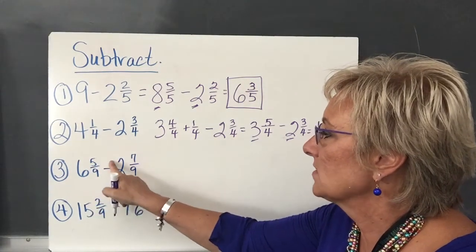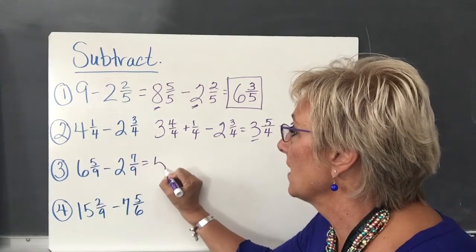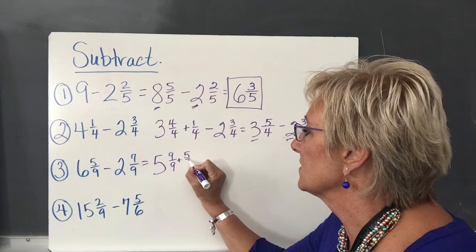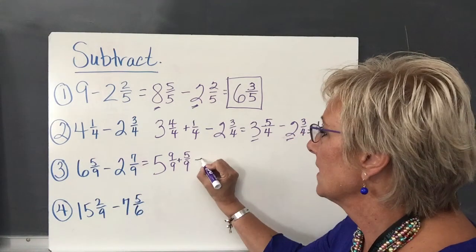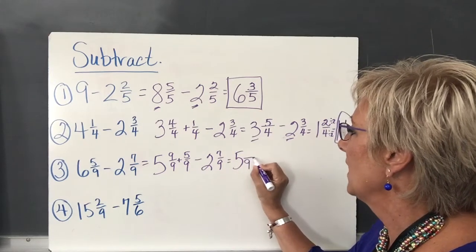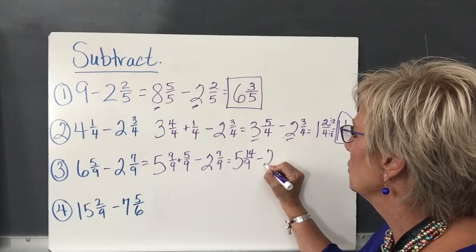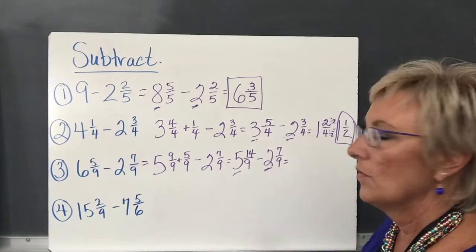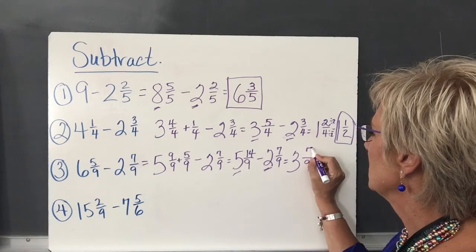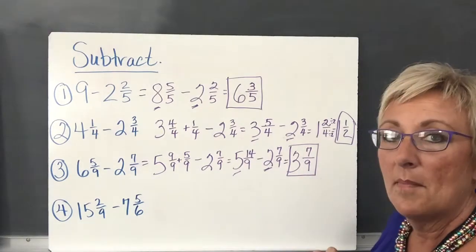Here I've got 6 and 5/9 minus 2 and 7/9. Since 5 minus 7 won't work, I have to borrow from the 6, leaving me with 5. Remember, 5 and 9/9 is the same as 6. But I also have to add the 5/9 that was with the whole number 6. So I rename it as 5 and 14/9 — since 9 plus 5 is 14 — minus 2 and 7/9. Whole numbers: 5 minus 2 is 3. Common denominator is 9, and 14 minus 7 is 7. No common factor other than 1 for 7 and 9, so the answer is 3 and 7/9.